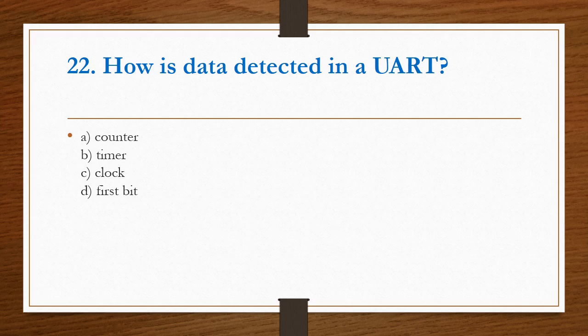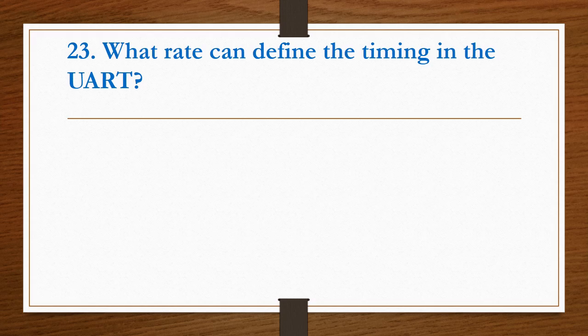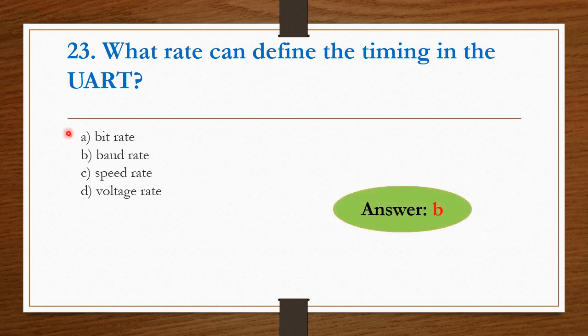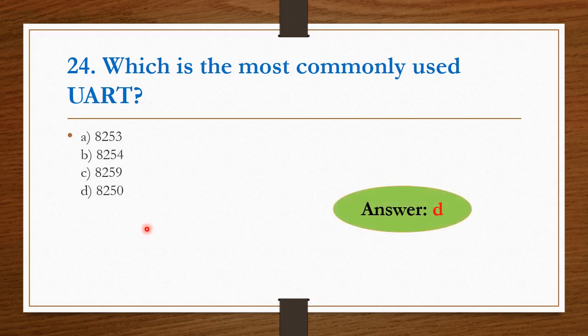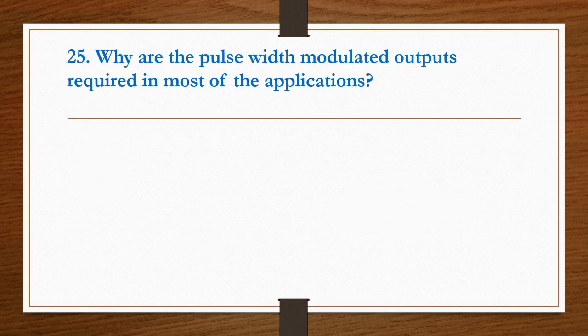How is data detected in UART? Using clock, we can detect the data. Option C is the right answer. What rate can define the timing in UART? Here option B is the right answer, baud rate. Which is the most commonly used UART? 8250. Option D is the right answer.